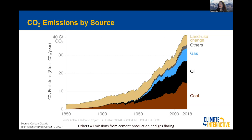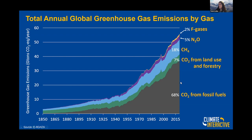Let's look at all the different greenhouse gases. Carbon dioxide emissions from fossil fuels have grown from very small around 1850 to almost 36 or 37 gigatons of CO2 equivalents per year. Carbon dioxide from land use and forestry is about 7% of total greenhouse gas emissions. Methane, mostly from agricultural activities and industry, is about 18%. Nitrous oxide is about 5%. And F-gases — the man-made chlorofluorocarbon gases — are about 2% of all greenhouse gas emissions.